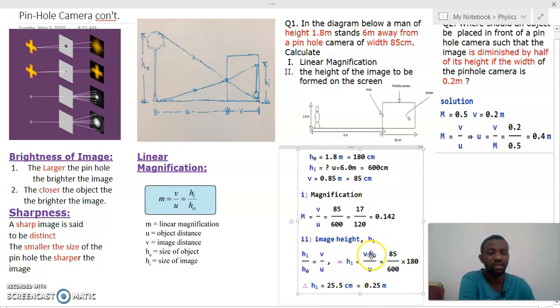Then all we have to do is make substitution. v is 85, u is 600, ho is 180. When we multiply and divide, we end up with 25.5 centimeters, which is equivalent to 0.25 meters.